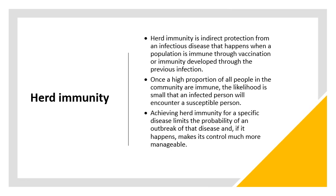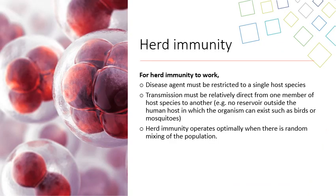Herd immunity is indirect protection from an infectious disease that occurs when a population is immune through vaccination or immunity developed through previous infection. Once a high proportion of the population in a community is immune, the likelihood is small that an infected person will encounter a susceptible person. Achieving herd immunity for a specific disease limits the probability of an outbreak and makes any outbreak that does occur much more manageable. For herd immunity to work, the disease agent must be restricted to a single host species, transmission must be relatively direct from one person to another, and there must be random mixing of the population.